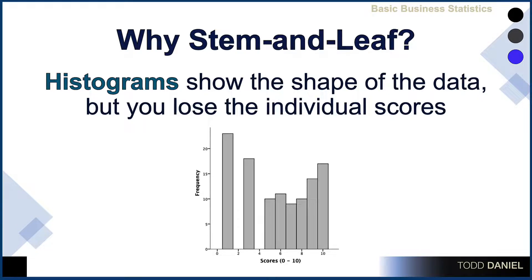When we are displaying continuous data, we can put those data into a histogram and we will see the shape of the data. In this case, we see a bimodal distribution — something that we could not see in a frequency table. However, if I ask you how many people scored a six in this data set, it's very difficult to make that determination. We've lost the individual scores.